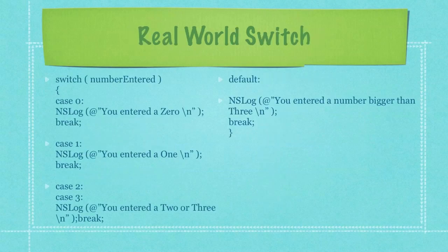Here's a real world switch statement in which we are checking what value is assigned to the variable name number entered. If the number entered was 0 we're going to print out to the screen you entered 0.